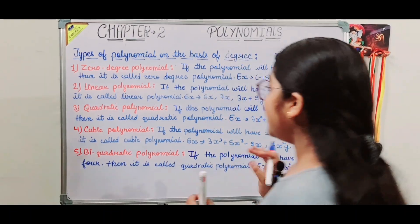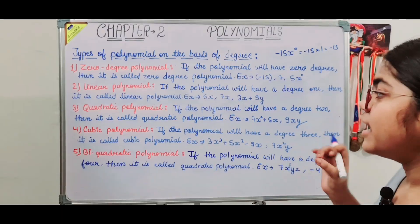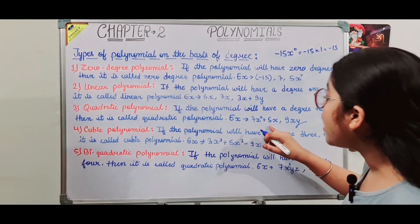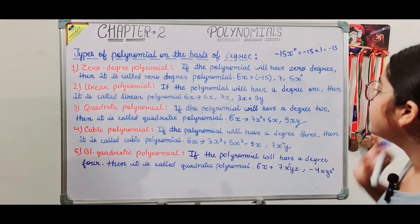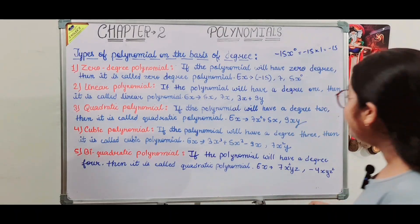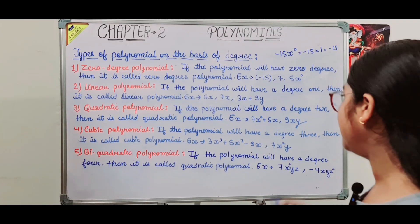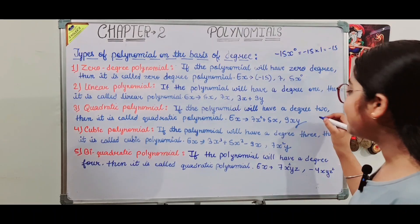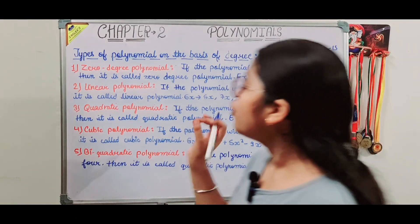Next, the quadratic polynomial: if the highest power of the variable is 2, then it is called a quadratic polynomial. For example, 7x squared plus 5x — x squared has power 2. Also, 9xy: x has power 1 and y has power 1, and in multiplication we add the powers, so 1 plus 1 equals 2. So 9xy is also a quadratic polynomial with degree 2.